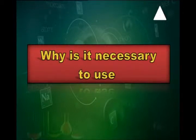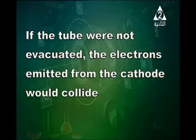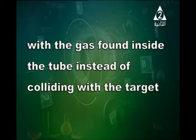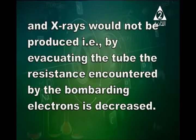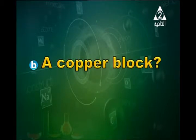Why is it necessary to use a vacuum tube? If the tube weren't evacuated, the electrons emitted from the cathode would collide with the gas inside the tube instead of colliding with the target, and X-rays would not be produced. By evacuating the tube, the resistance encountered by the bombarding electrons is decreased. What about the use of the copper block? During operation, the temperature of the tungsten target rises highly.